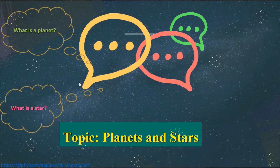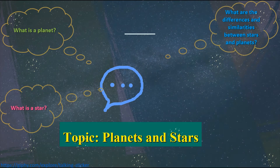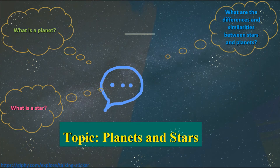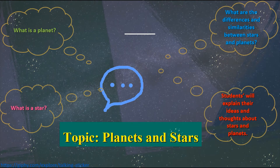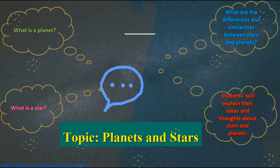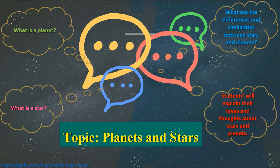Those are examples of the road safety model that all of you finished last week. For our lesson today, we are going to study about planets and stars. What is a planet? What is a star? What are the differences and similarities between stars and planets? Today you will also be able to explain or share your ideas about stars and planets. Are you excited? Let's begin.